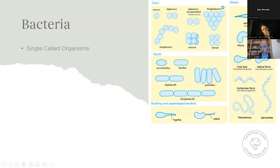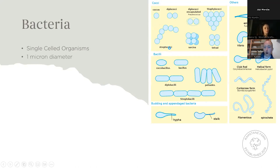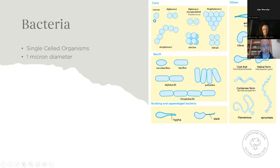Bacteria are single-celled organisms. This picture gives you an idea of the types and shapes of bacteria you can get. The simplest being the cocci, which is a round bacteria, all the way up to complicated corkscrew-looking ones like Spirella and Spirochetes — these are the disease causers. The smallest bacteria is about one micron in diameter — very, very small. They just look like tiny little pencil dots when you're looking at them under the microscope.